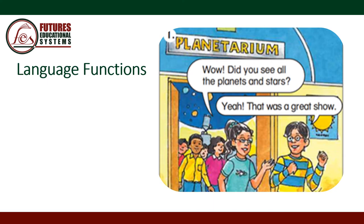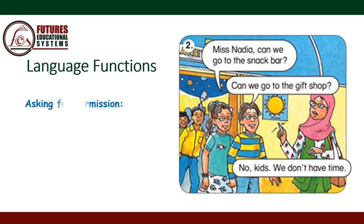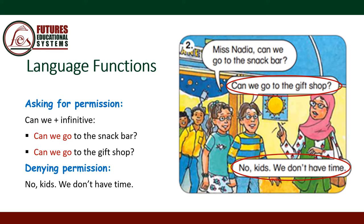Language functions. Picture 1: expressing surprise using the word 'Wow!' Picture 2: asking for permission — we use 'Can we + the infinitive form of the verb.' For example: 'Can we go to the snack bar? Can we go to the gift shop?' Denying permission: 'No, kids, we don't have time.'